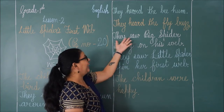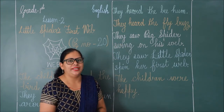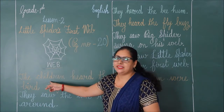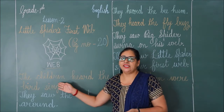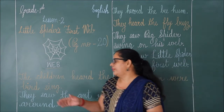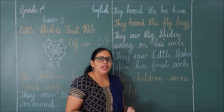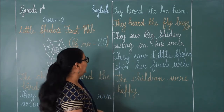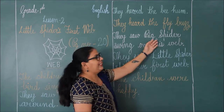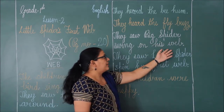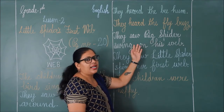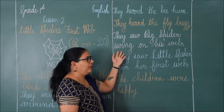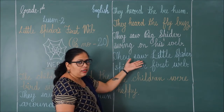They saw — s-a-w, saw means dekha — the big spider swing on his web. Unhone dekha — they saw. Jo bada spider tha, wo apne web par swing kar raha tha, apne web par swing karte huye unhone us ko dekha.